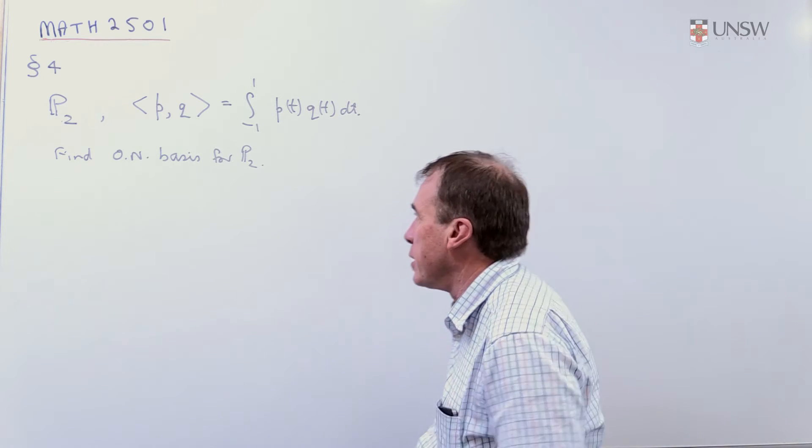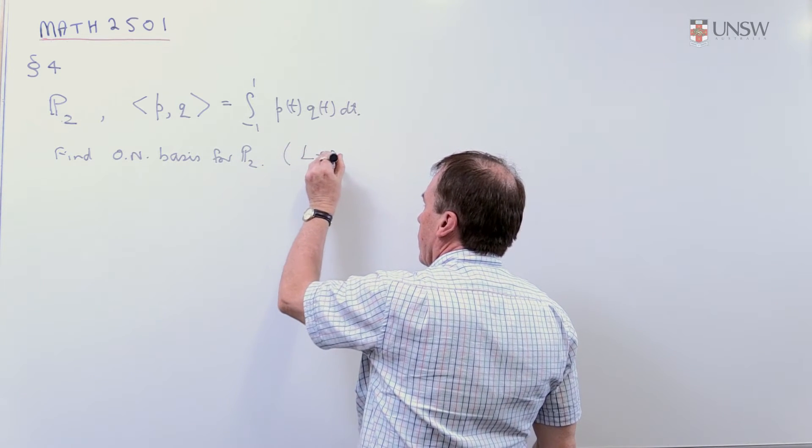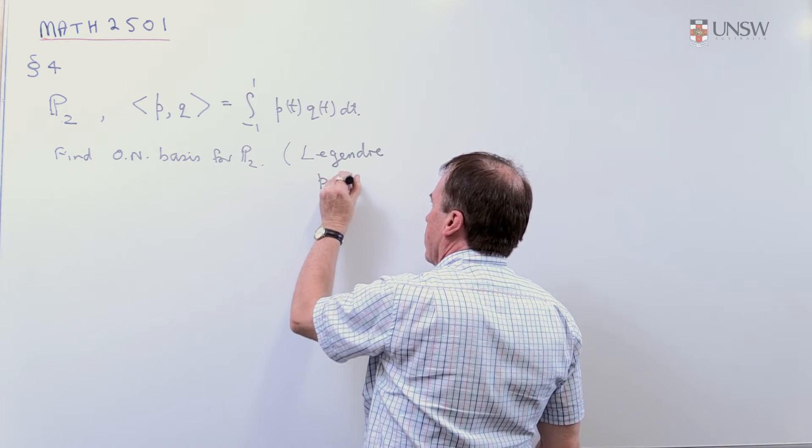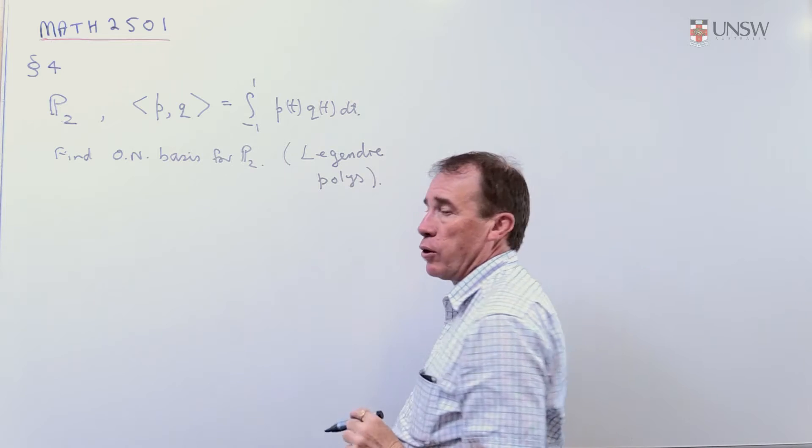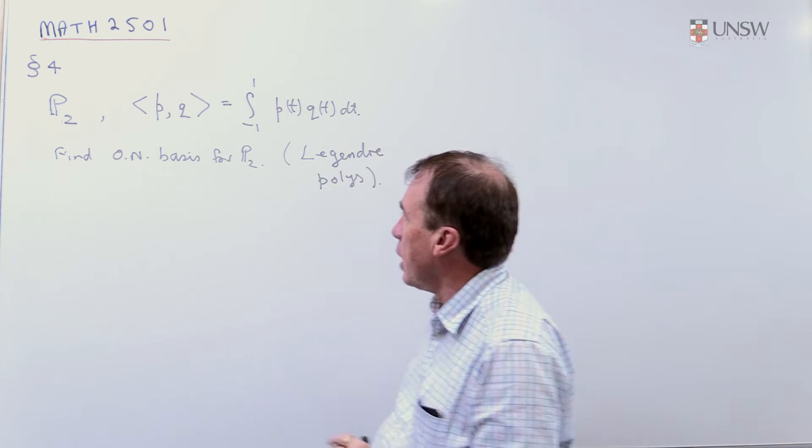Now, in fact, this orthonormal basis has an interesting name. These are called the Legendre polynomials. And you can Google these and find interesting properties of these things.